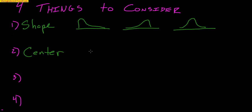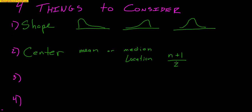Then we want to talk about center. When we talk about center, we have the mean or the median. The mean is the average — you add them all up and divide by how many there are. The median location is found by taking how many values you have plus 1 divided by 2. That tells you the location, not what the median is. When data is symmetric and mound-shaped, the mean and median are both pretty much exactly the same. But when you are skewed, the mean goes towards that tail — so skewed right means the mean is higher than the median, and skewed left means the mean is lower than the median.